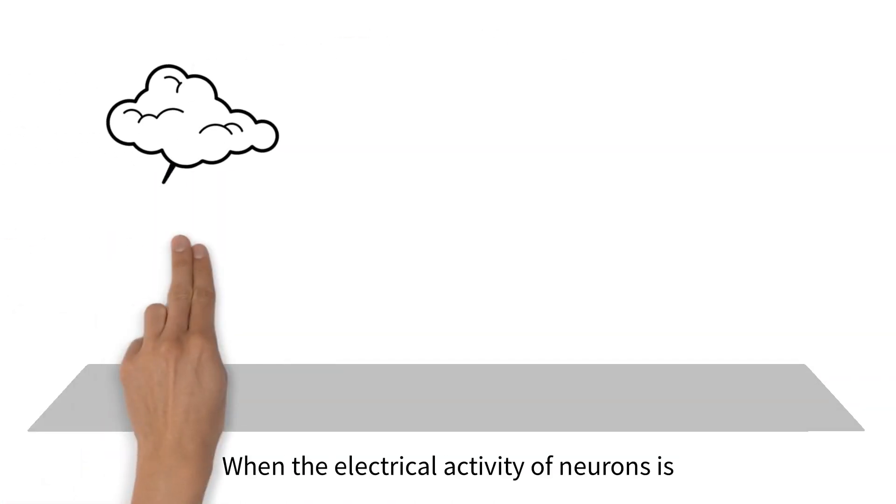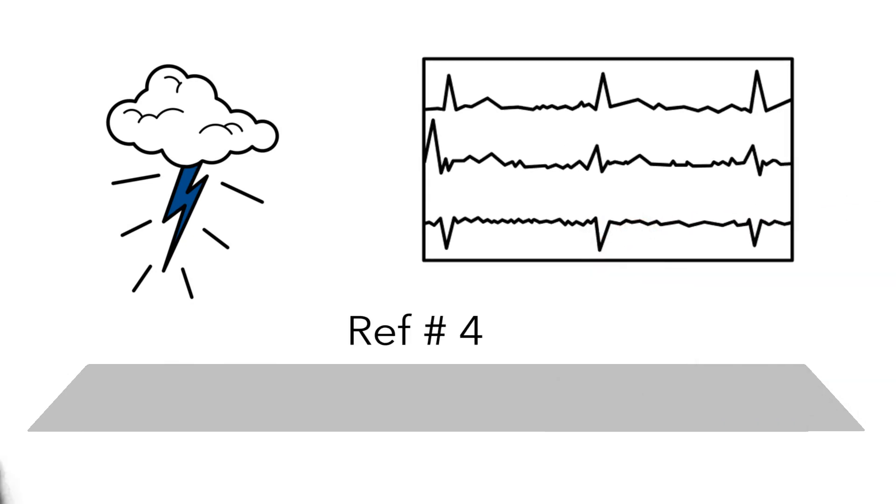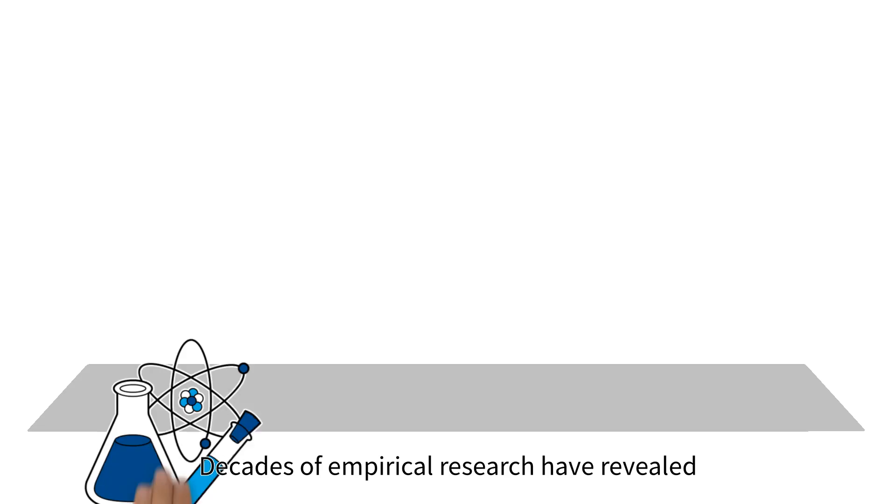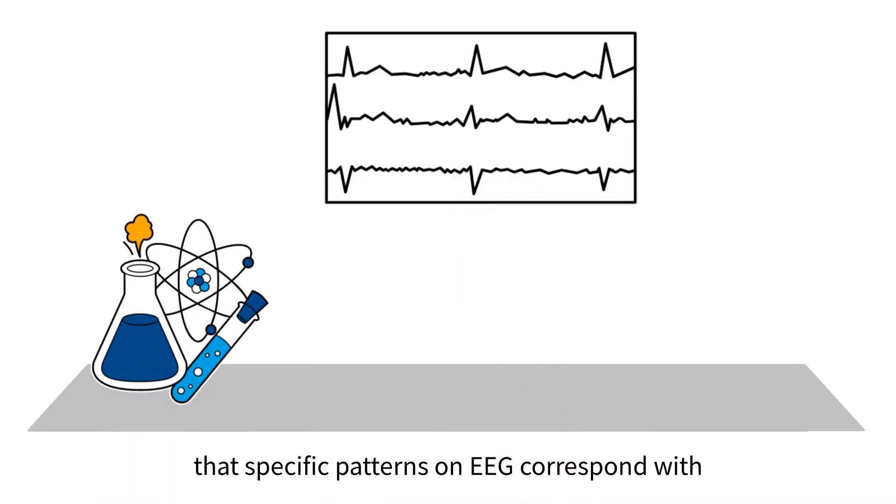When the electrical activity of neurons is graphed over time, distinguishable patterns can emerge. Decades of empirical research have revealed that specific patterns on EEG correspond with specific states of the brain.